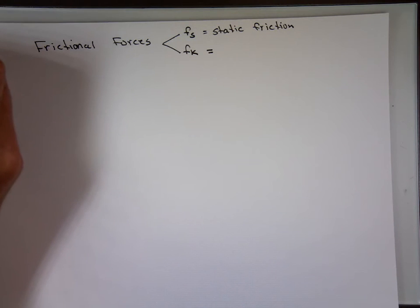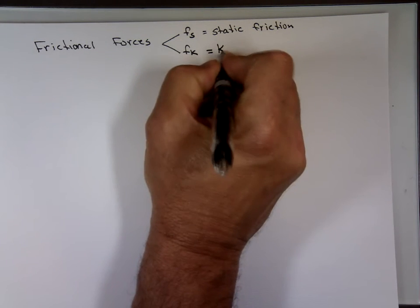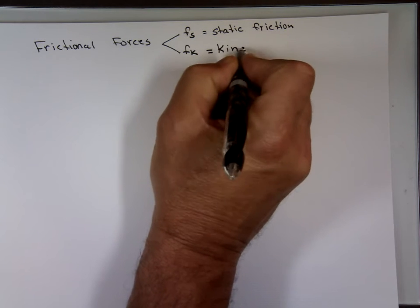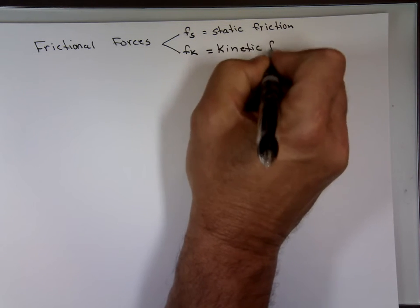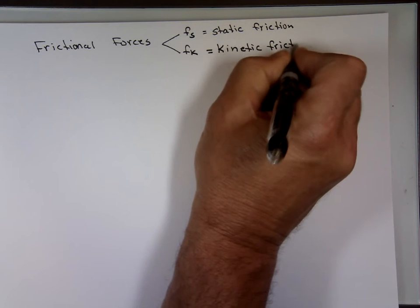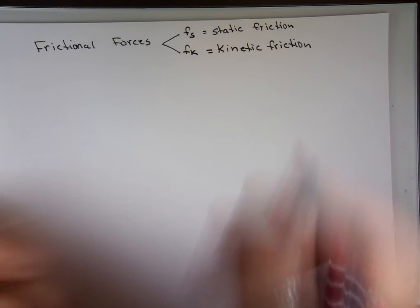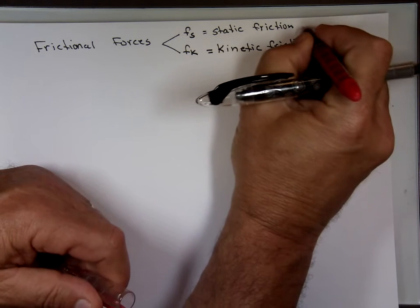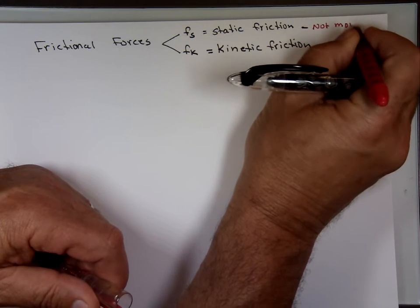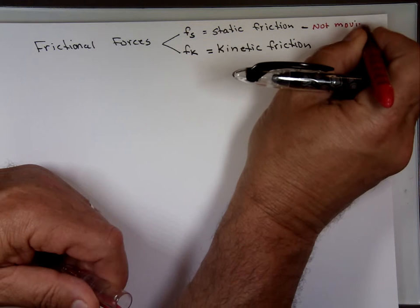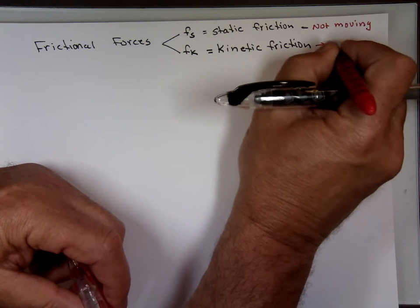Does our book talk about that? Yes - kinetic friction. So static friction: the object is not moving. And kinetic friction: the object is moving.